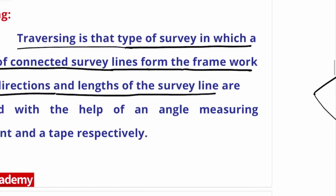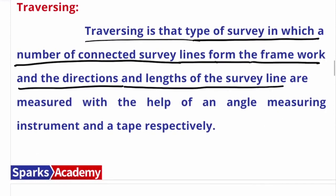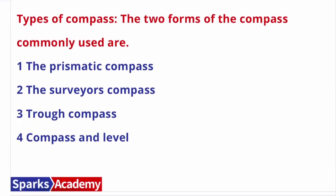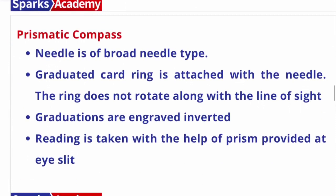Traversing is a separate topic we will cover in detail. Now, regarding types of compass: there are four types of compass, and the two major types are prismatic compass and surveyor's compass.